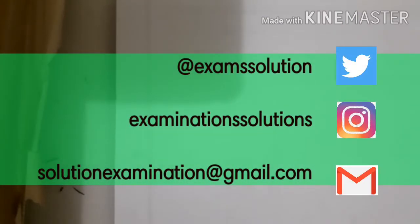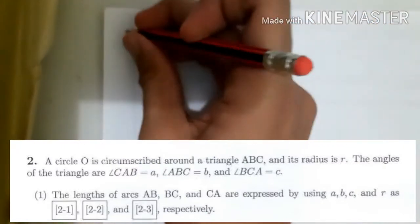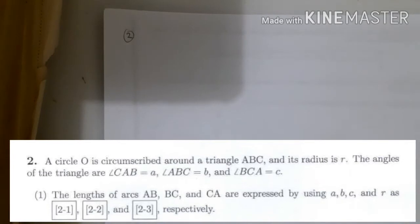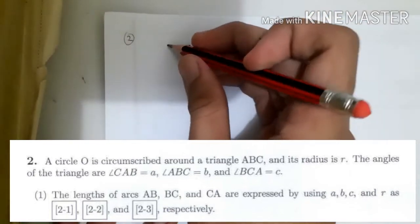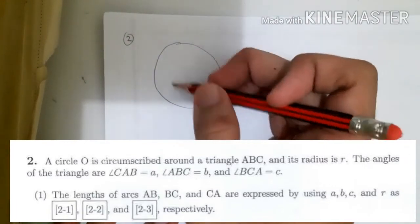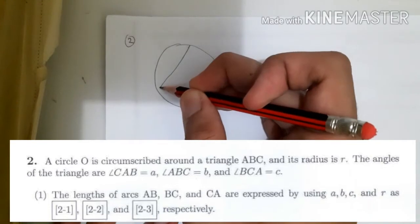Hello everyone, welcome to part 2 of Momoka Gyakushio Mathematics A, 2015, number 2. We got the question about a circle that is circumscribed inside the triangle. Circle O is circumscribed around a triangle ABC, the radius is R, and you can see the circle is circumscribed around the triangle.